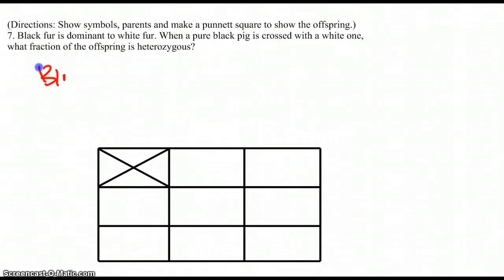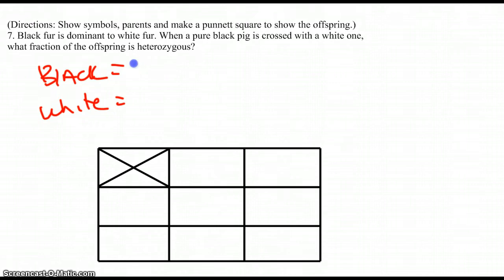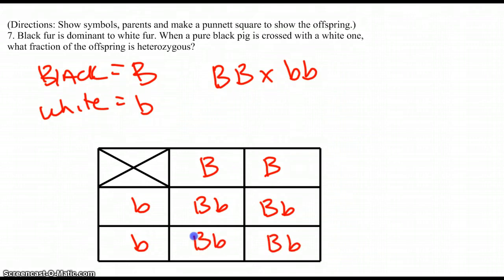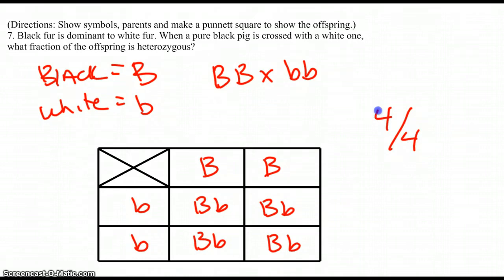Problem 7 involves pigs — black fur versus white fur. A pure black pig crossed with a white pig. Pure means homozygous. The only way to have white is to be homozygous recessive. This problem asks for the fraction of offspring that are heterozygous. There are four possible offspring and we don't do any reducing — all four are heterozygous, so the fraction is four out of four.